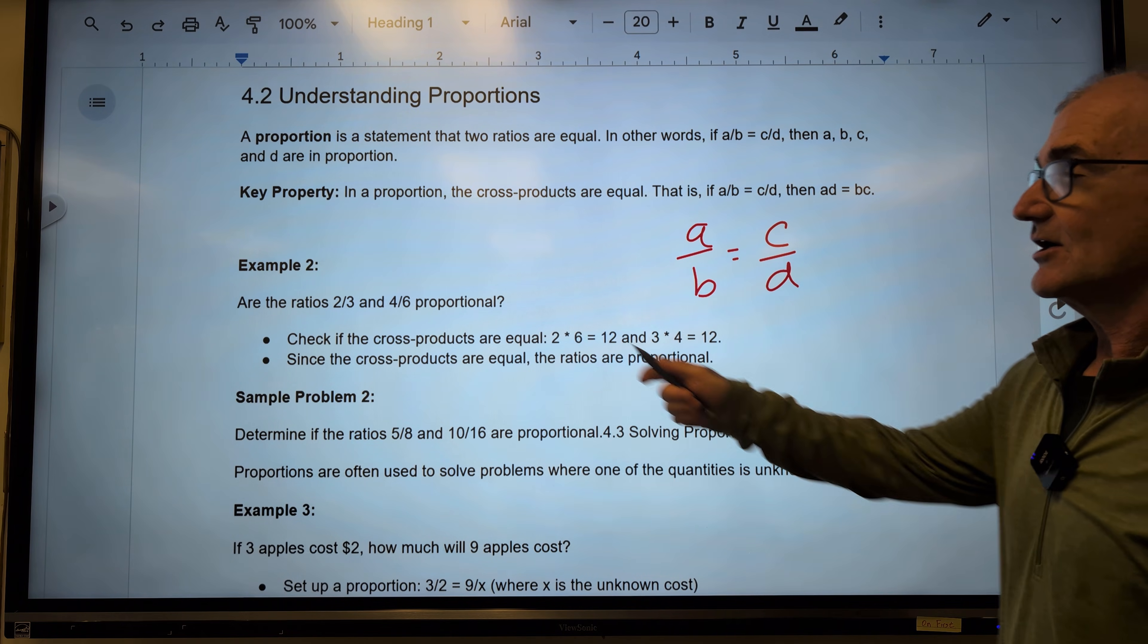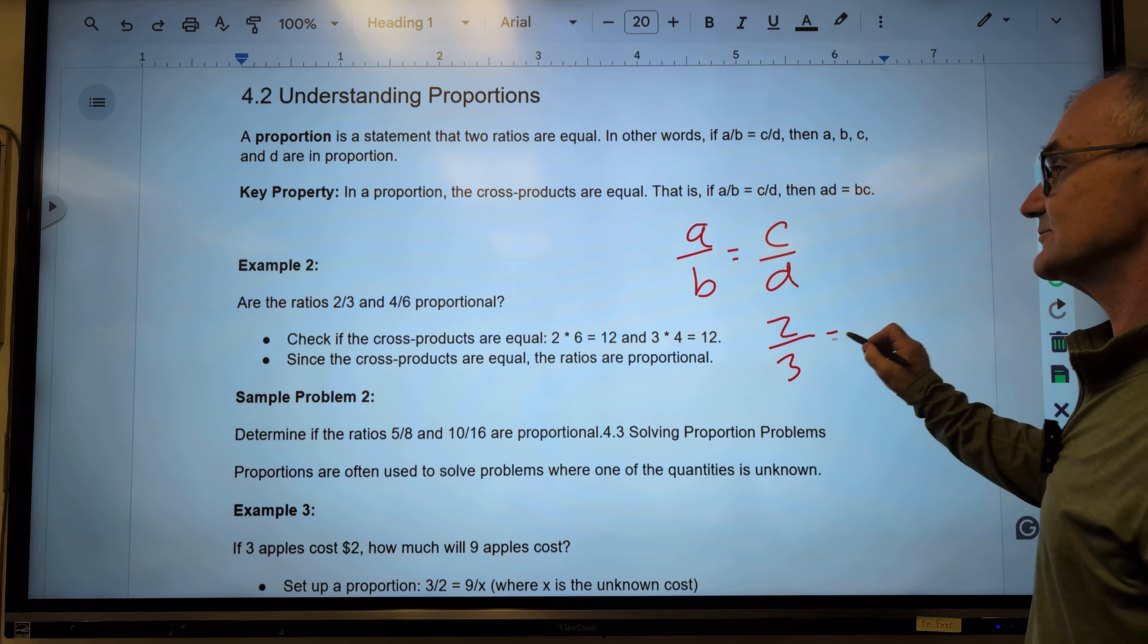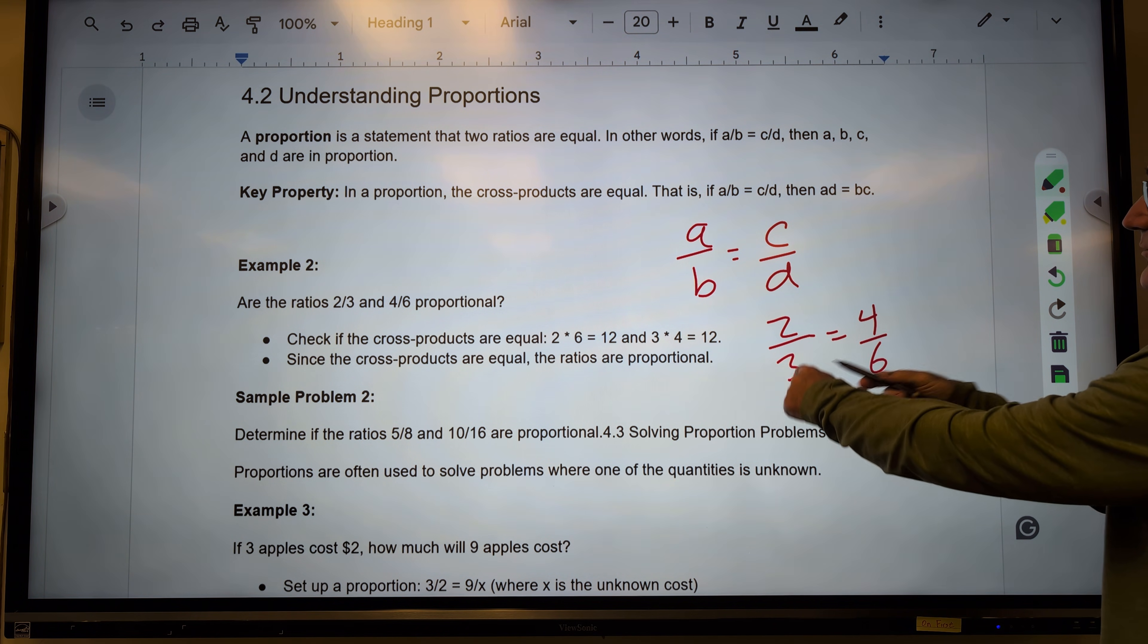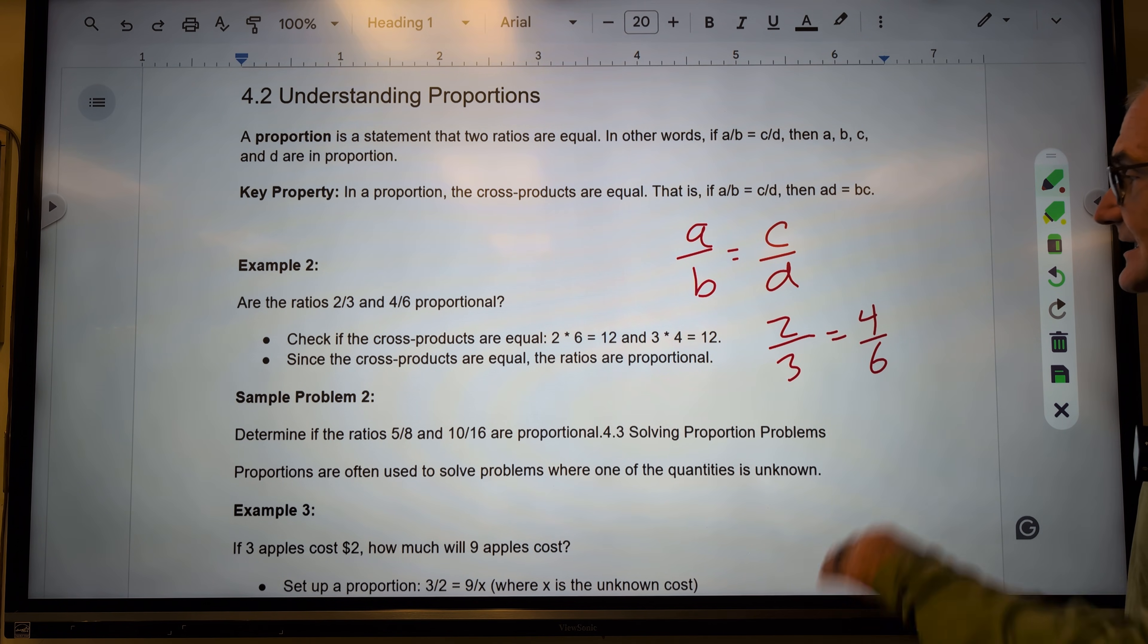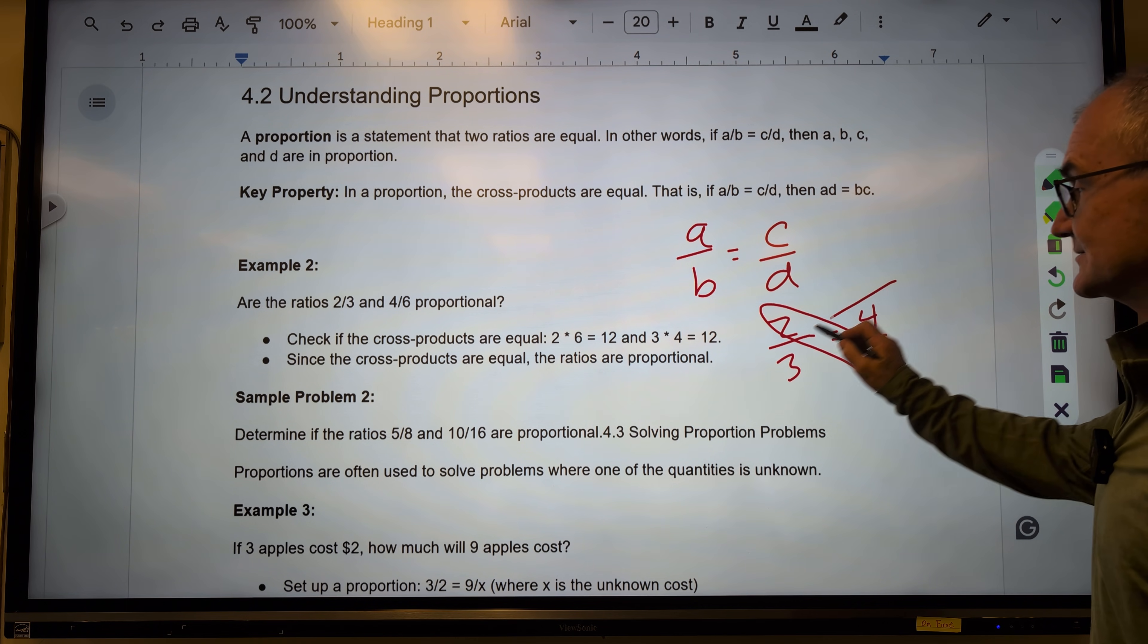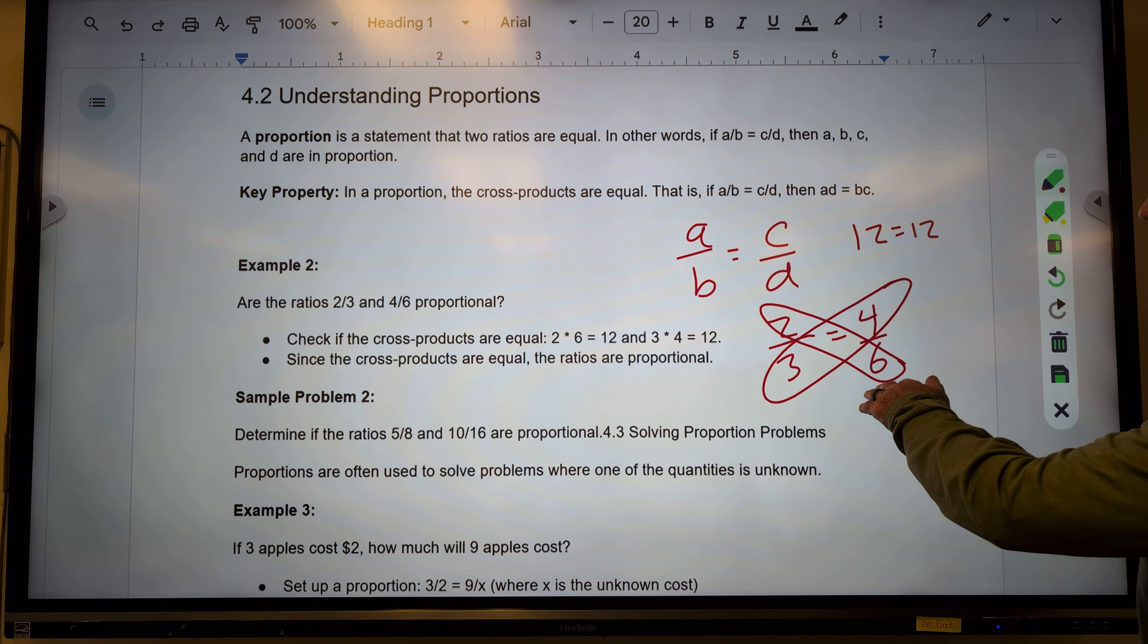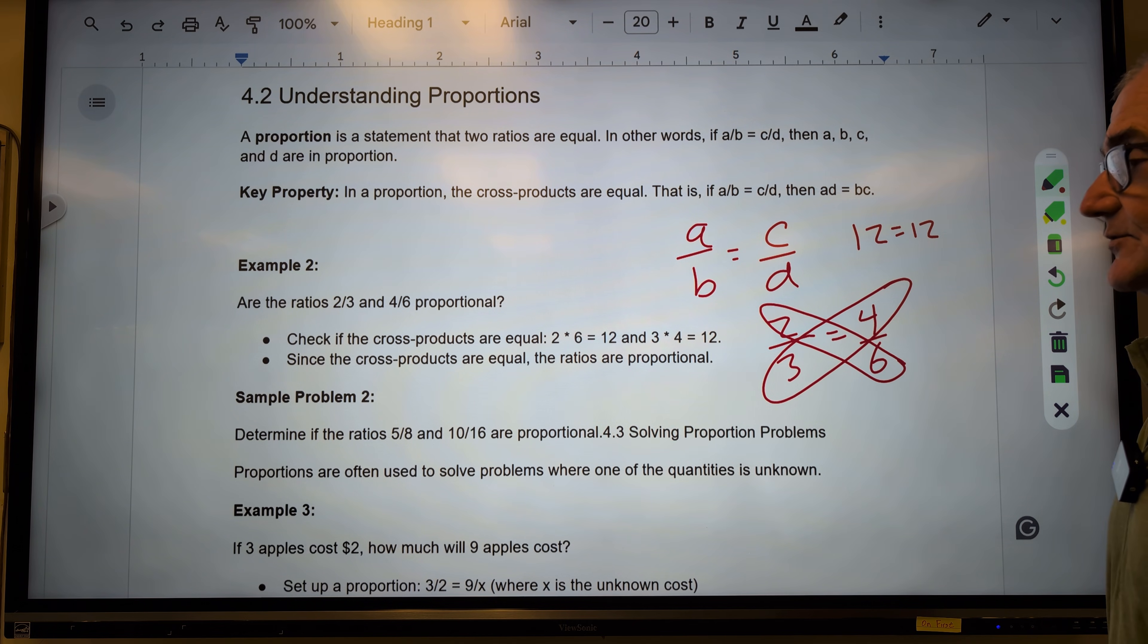So are 2/3 and 4/6 proportional? So I set 2/3 equal to 4/6. I could see that 2 times 2 is 4, 3 times 2 is 6. So yes, they are proportional. Another way to solve this is what's called cross-multiplying. I take that times that, and that should be equal to that times that. So 2 times 6 is 12, 3 times 4 is 12. Is 12 equal to 12? Yes, it is. Therefore, 2/3 is proportional to 4/6.